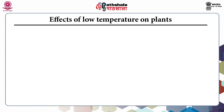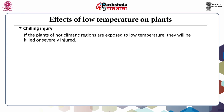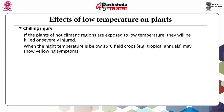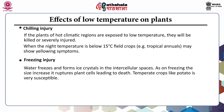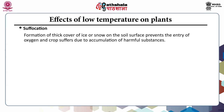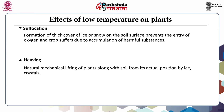Low temperature also impacts plants. Chilling injury occurs when plants of hot climatic regions are exposed to low temperature — they will be killed or severely injured. When night temperature falls below 15°C for tropical annual field crops, yellowing symptoms may appear. Freezing injury occurs when water freezes and forms ice crystals in the intercellular spaces; on freezing the size increases, rupturing plant cells and leading to death. Temperate crops like potato are also very susceptible to low temperature. Suffocation occurs when thick ice or snow cover on the soil prevents oxygen entry, causing accumulation of harmful substances. Heaving is the natural mechanical lifting of plants along with soil from their actual position by ice crystals.